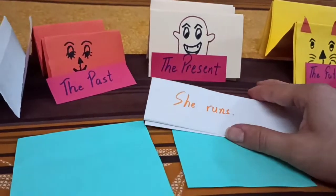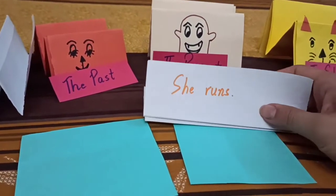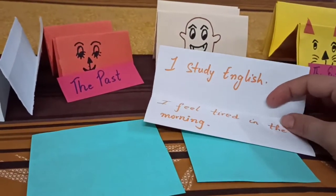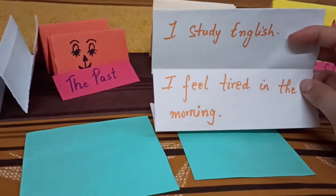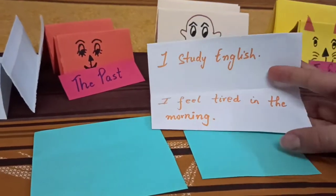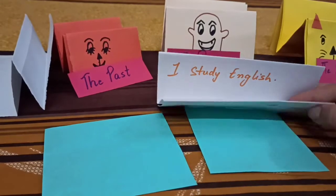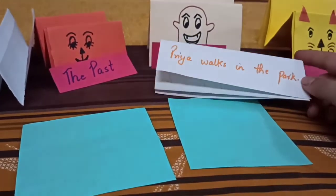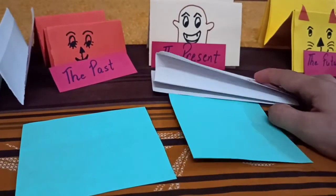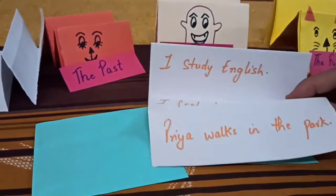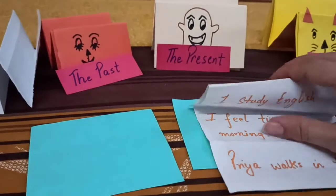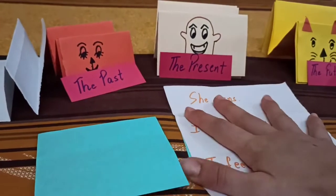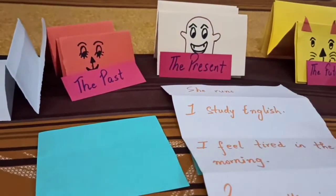Ready to look at some examples? And the last one — Priya walks in the park. So the verbs used in this form of the tense are all in the first form. This tense, where we use the first form of the verb, is called the simple present tense.